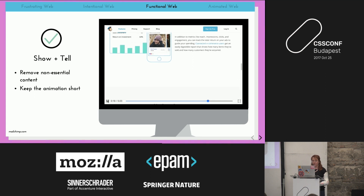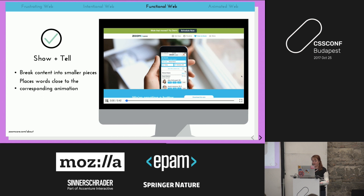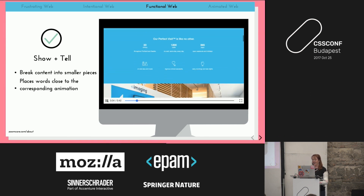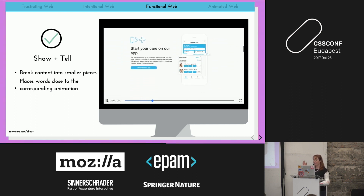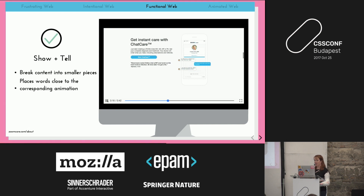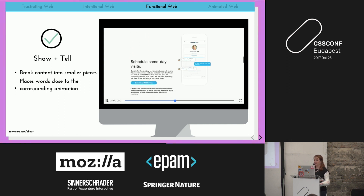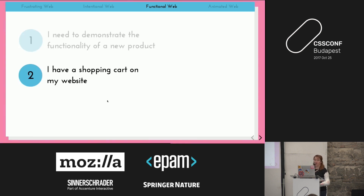Another great example is ZoomCare, a convenient care clinic in the States — if you fell on a sidewalk you'd want to go there. They wanted to promote their app, so as you scroll down they fix the mobile device in view, and as you reach each feature they show you exactly what it looks like in the app. It breaks content into smaller, digestible pieces and places the words really close to the animation that demonstrates them.